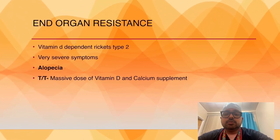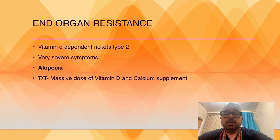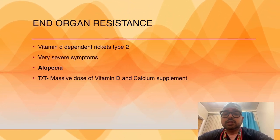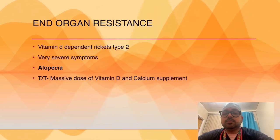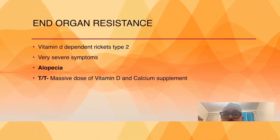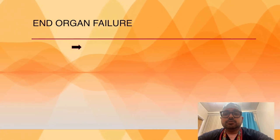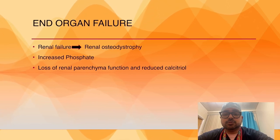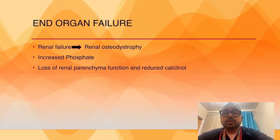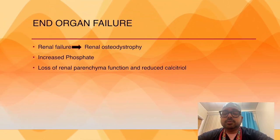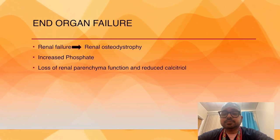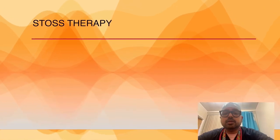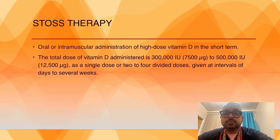Third variety: end organ resistance, also called vitamin D dependent rickets type 2. The presentation is very severe and associated with alopecia. Treatment: massive dose of vitamin D and calcium supplements. Fourth variety: end organ failure, due to renal failure, leading to renal osteodystrophy, associated with increased phosphate level, loss of renal parenchymal function, and reduced calcitriol level.